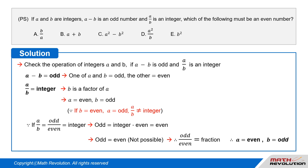We get odd equals even, which is impossible. So odd over even must be a fraction. This is really important. It is important to understand the fact that A equals odd and B equals even is impossible, and it should be A equals even and B equals odd. Thus, A is even and B is odd.